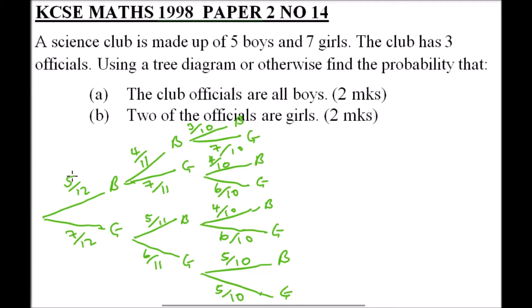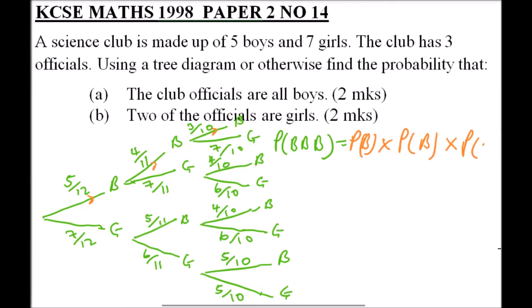For part (a), we find the probability that the club officials are all boys. This is the probability that the first is a boy, the second is a boy, and the third is a boy. We have only one option — that branch: boy and boy and boy. So we multiply the probability of selecting a boy in the first round by the probability of selecting a boy in the second round.